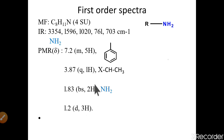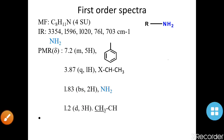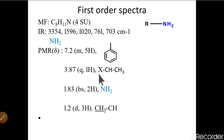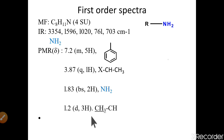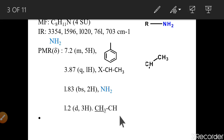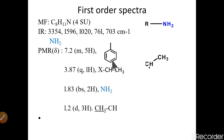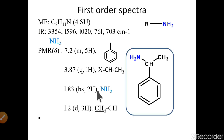The next signal at 1.83 is a broad singlet of 2H — this confirms the NH2 group. The final signal at 1.2 is a doublet of 3H; these three hydrogens are attached to the CH, and the CH causes the doublet by the N+1 rule. Assembling all four groups — benzene ring, CH, CH3, and NH2 — gives us the final structure: a monosubstituted benzene with a CH(NH2)CH3 group attached.